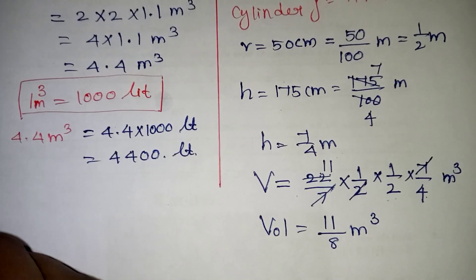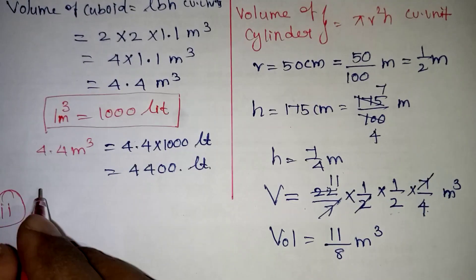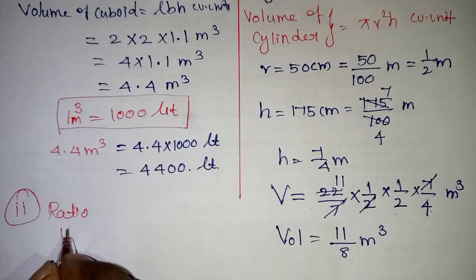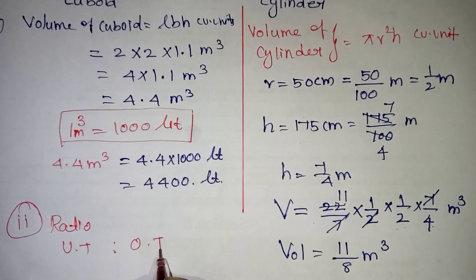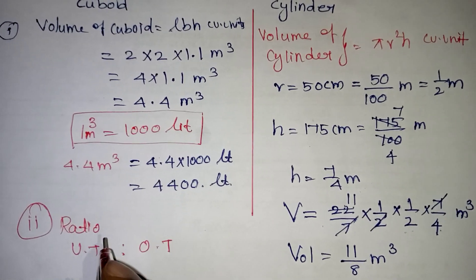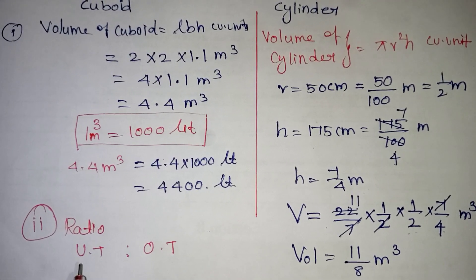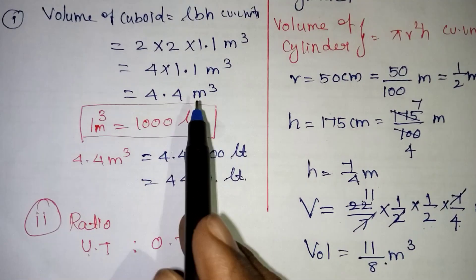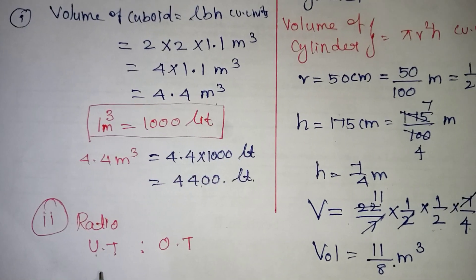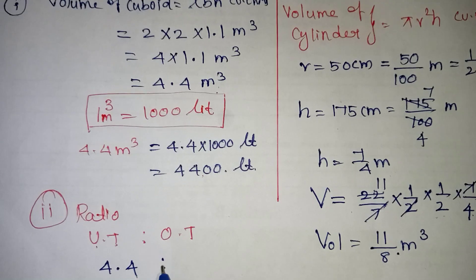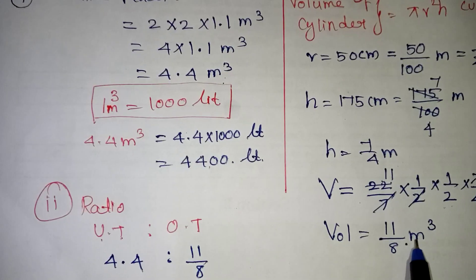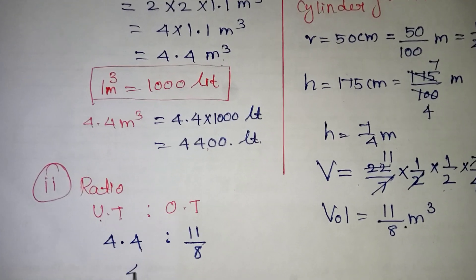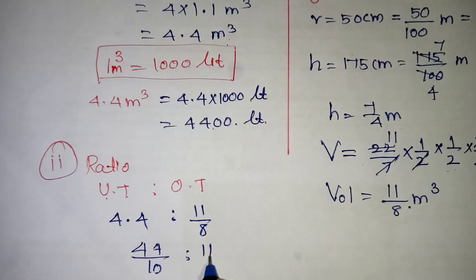The volume of the overhead tank is 11/8 cubic metres. Now, for the ratio of underground tank capacity to overhead tank capacity, the underground tank volume is 4.4 m³, which equals 44/10 m³. The overhead tank volume is 11/8 m³.